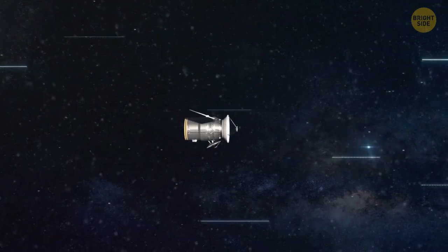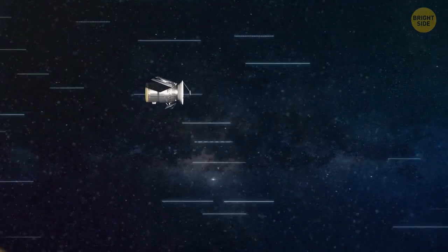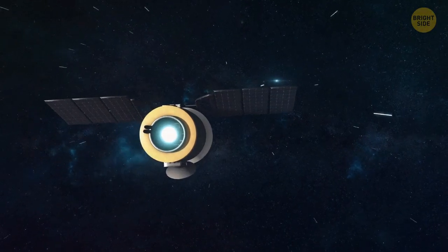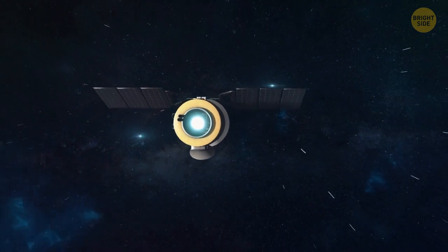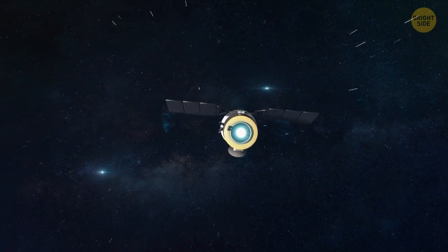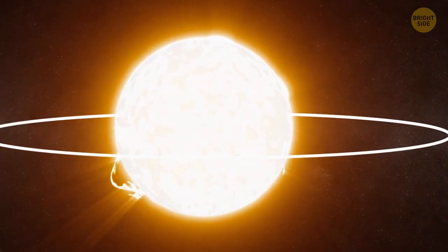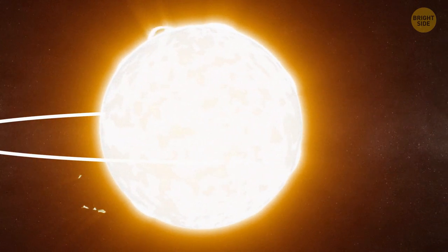The probe made several circles following a stable orbit. But then, its orbit intersected with that of Venus again. Another gravitational maneuver. And after that, the Parker Solar Probe's trajectory shifted slightly and it gained more speed. The perihelion point of its orbit was now closer to the sun.